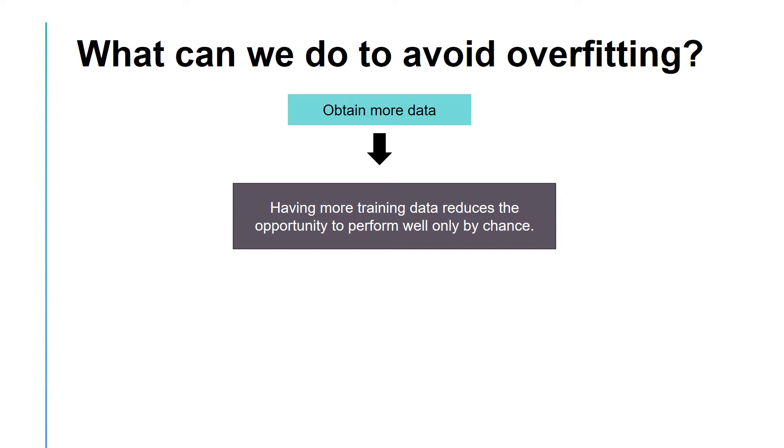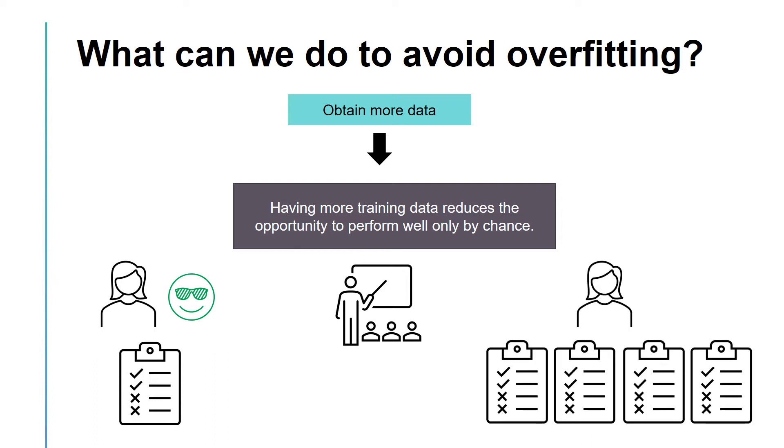For example, if a professor gives you one multiple choice exam, there could be a high probability that someone in the class performs well just by guessing the answers. However, if the professor gives 10 exams, it is unlikely that someone performs well in all of them just by guessing the answers.